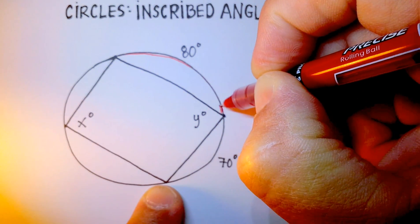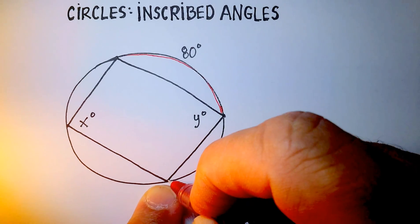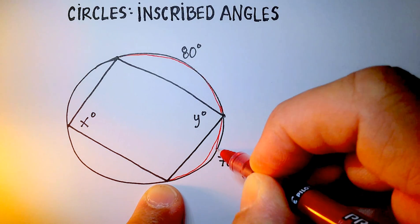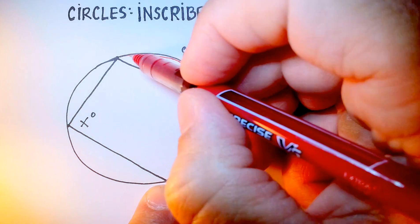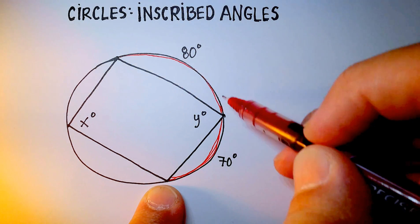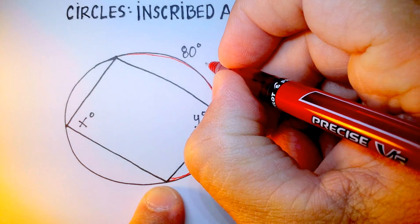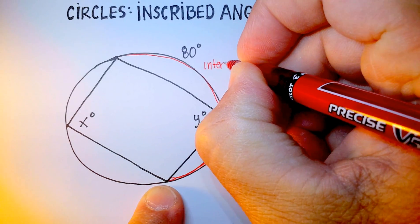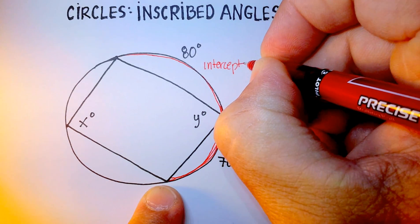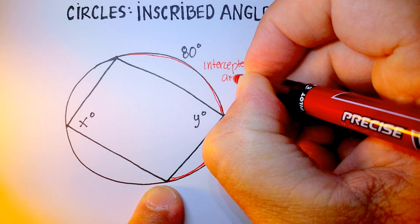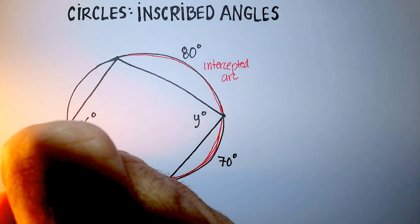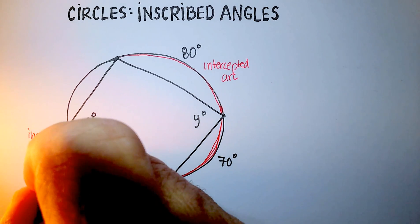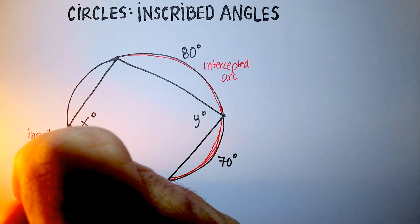And remember that the intercepted arc is where the angle actually goes out to. So here is angle x, here's the intercepted arc. Remember that language, intercepted arc, and then this angle x is the inscribed angle.